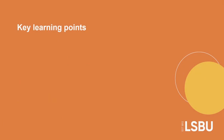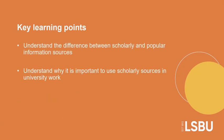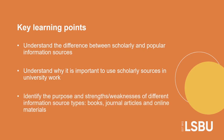The key learning points for this session are to understand the difference between a scholarly or academic information source and a popular information source, and therefore why it is important to use scholarly sources when reading, researching or writing your university work. By the end of the video you will also be able to identify the purposes, strengths and weaknesses of different scholarly information source types, which include books, journal articles and good quality online materials.